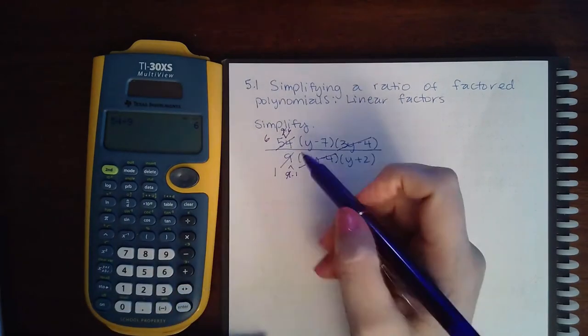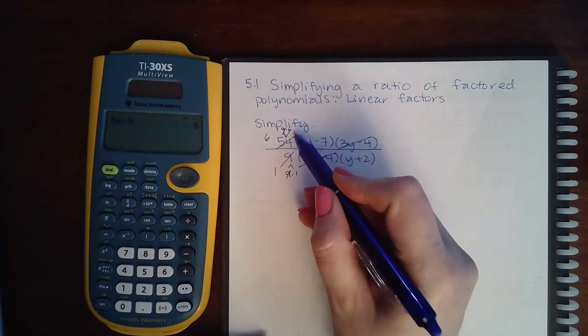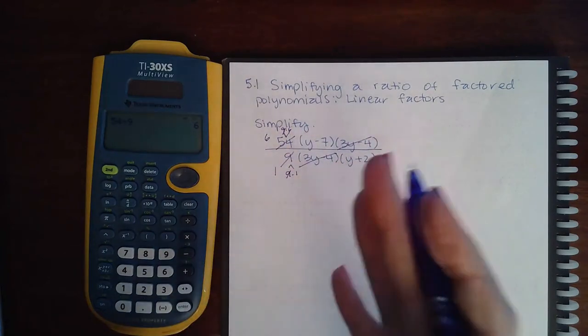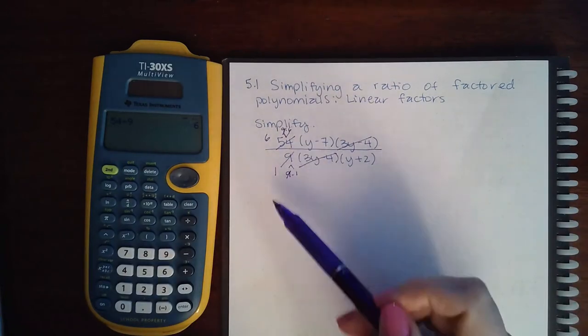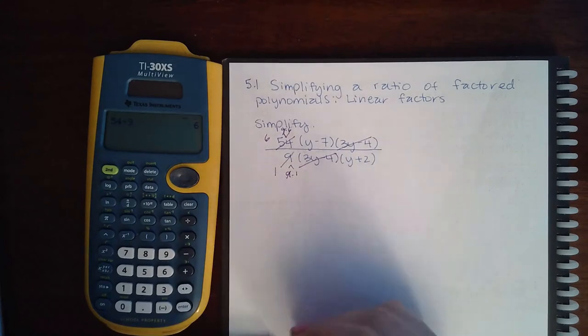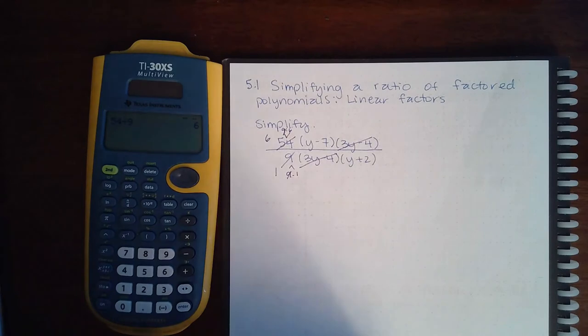You couldn't say that, like start breaking this up with a plus sign. Like 54 is 50 plus 4 and 9 is 10 minus 1, and then cancel or reduce the 50 and the 10. You cannot do things like that. You can only cancel factors, not terms.